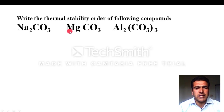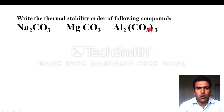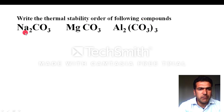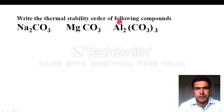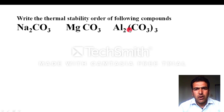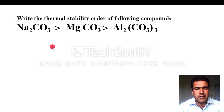Another question: compare the thermal stability of sodium carbonate, magnesium carbonate, and aluminium carbonate. Here the cations belong to different groups but the anion (carbonate) is polyatomic. For polyatomic anions, thermal stability depends on polarization. Aluminium has a higher charge density and greater polarizing power than magnesium, and magnesium more than sodium. So the most stable compound is sodium carbonate, followed by magnesium carbonate, then aluminium carbonate.